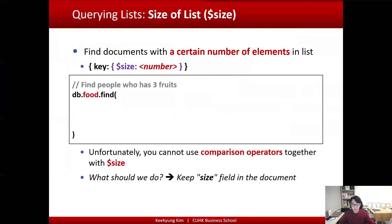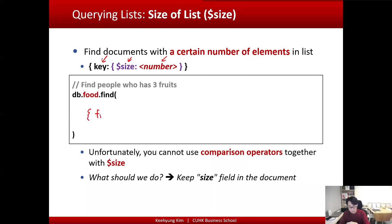The next operator I'm going to talk about is the size operator. In MongoDB, you may have a list data type and want to know the size of the list. This operator is useful when you want to find documents with a certain number of elements in the list. You specify the field name, use the size operator, and specify the number.